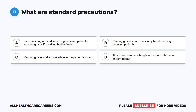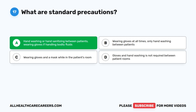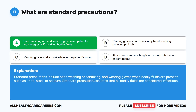Question 17. What are standard precautions? A. Handwashing or hand sanitizing between patients, and wearing gloves if handling bodily fluids. B. Wearing gloves at all times, only handwashing between patients. C. Wearing gloves and a mask while in the patient's room. D. Gloves and handwashing are not required between patient rooms. The correct answer is A. Handwashing or hand sanitizing between patients, and wearing gloves if handling bodily fluids. Standard precautions include handwashing or sanitizing, and wearing gloves when bodily fluids are present, such as urine, stool, or sputum. Standard precaution assumes that all bodily fluids are considered infectious.